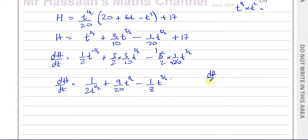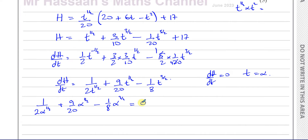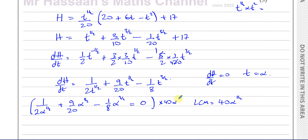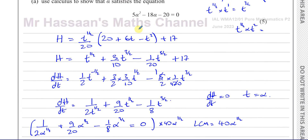When dH/dT equals zero, T equals alpha. So substituting T as alpha: 1 over 2 alpha to the half, plus 9 over 20 alpha to the half, minus 1 over 8 alpha to the 3 over 2 equals zero. To clear the fractions, the LCM of the denominators 2, 20, and 8 is 40. I'm going to multiply both sides of the equation by 40 times alpha to the power of one half.